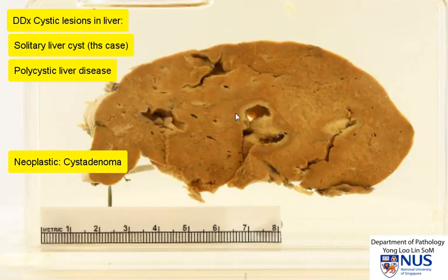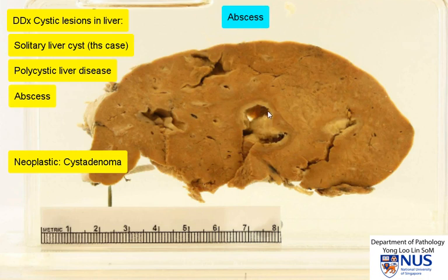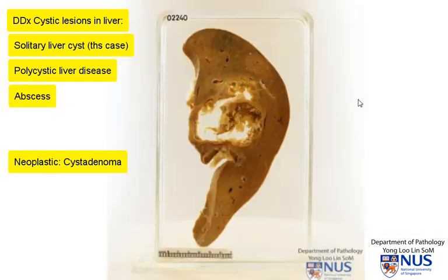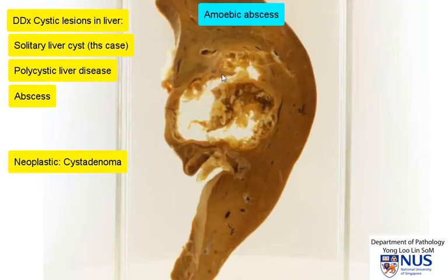Other non-neoplastic differential diagnoses of cystic or cavitating lesions would include an abscess. In this instance, you can actually see that the wall is rather necrotic and has this pale exudate. Here is another example — this is an amoebic abscess, which has a very friable appearing cyst lining with necrotic material that is sloughing off into the abscess cavity.